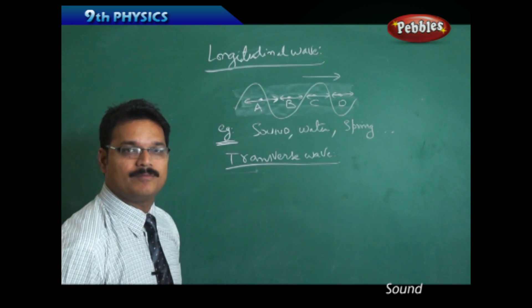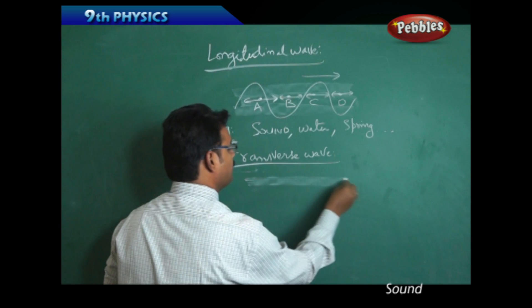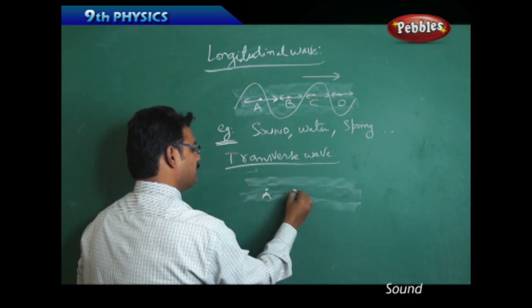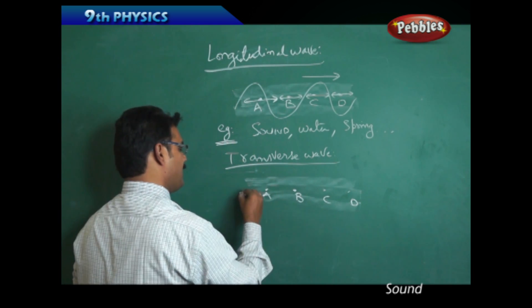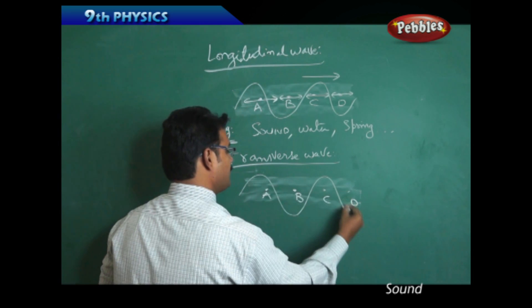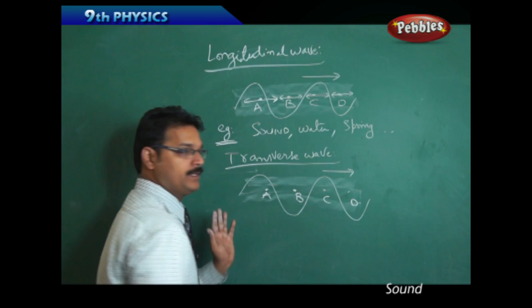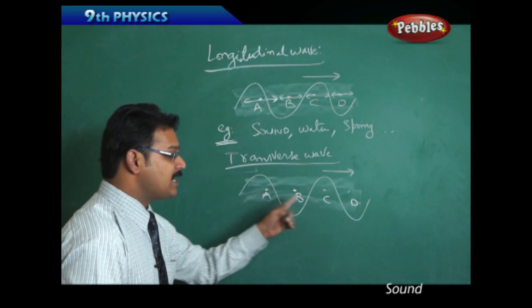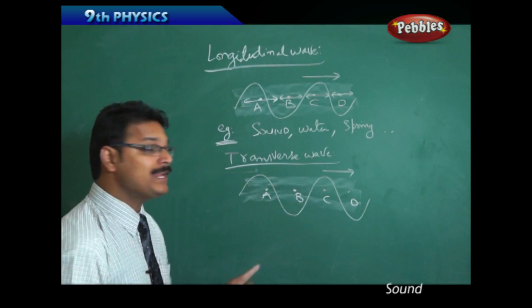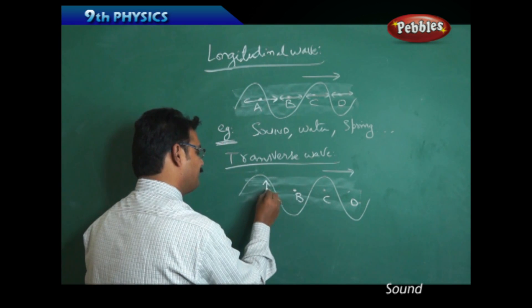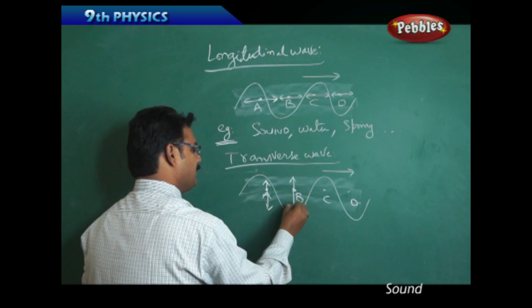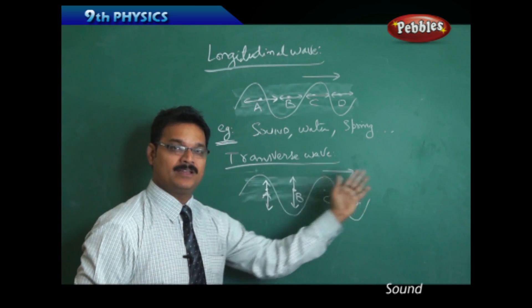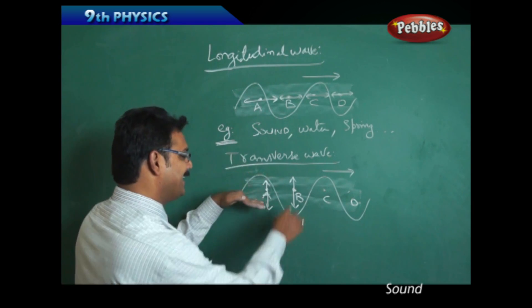For transverse waves, again take a medium with particles A, B, C, D. Again, a wave is propagating in the medium in the forward direction, on the right side. Now the particles start vibrating, but this time the particles vibrate perpendicular to the wave propagation. So the wave is moving horizontally to the right, but the particles are vibrating perpendicular, meaning at a 90-degree angle.